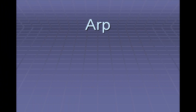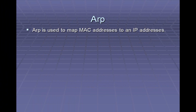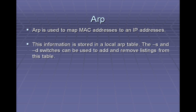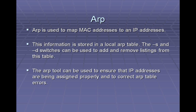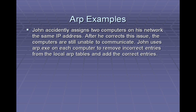The next tool we're going to look at is ARP. ARP is a very cool tool — it's basically a tool that maps the MAC addresses to the IP addresses. That's how your computer can tell what IP address is associated with what actual physical computer. It stores that in a table which you can edit with -s and -d, which stands for store and delete. In this example, John has accidentally assigned two computers on his network the same IP address. He corrects it, but then the local ARP cache is still messed up, so he loads up ARP to see the problem and manually correct it.